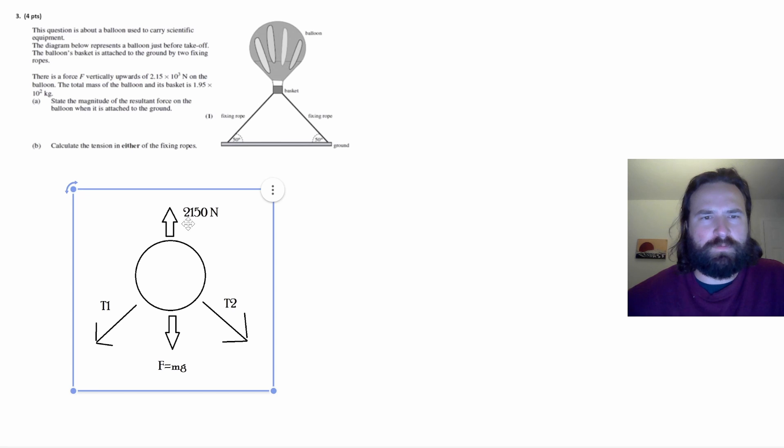I've got this upward force of 2150 newtons, and there's going to be a downward force from the mass of the balloon, which is going to be equal to its mass times the acceleration due to gravity. And then the tension on the ropes is going to have to make up for the rest of the force to keep this thing still.